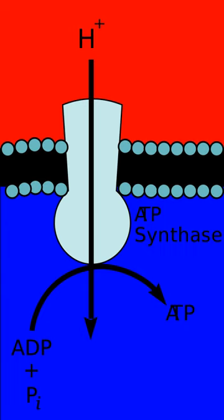The electron transport chain consists of a spatially separated series of redox reactions in which electrons are transferred from a donor molecule to an acceptor molecule. The underlying force driving these reactions is the Gibbs free energy of the reactants and products. The Gibbs free energy is the energy available to do work. Any reaction that decreases the overall Gibbs free energy of a system is thermodynamically spontaneous. The function of the electron transport chain is to produce a transmembrane proton electrochemical gradient as a result of the redox reactions.